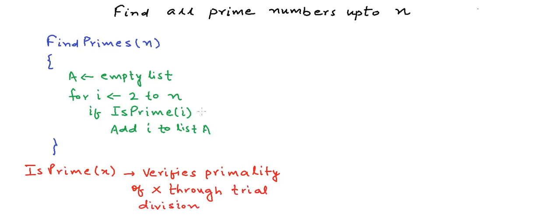What will be the time complexity of this particular algorithm? In the trial division method, we try dividing a number by all numbers till square root of n to test for primality. So the complexity of isPrime is O(√n). This method is being called n minus 1 times in the loop, so the overall time complexity would be O(n√n), because the running time of a loop is the number of times it runs multiplied by the complexity of the statements inside.